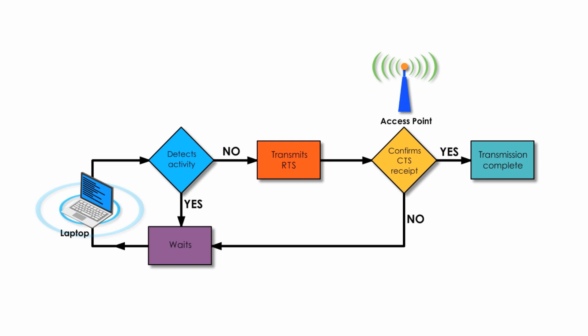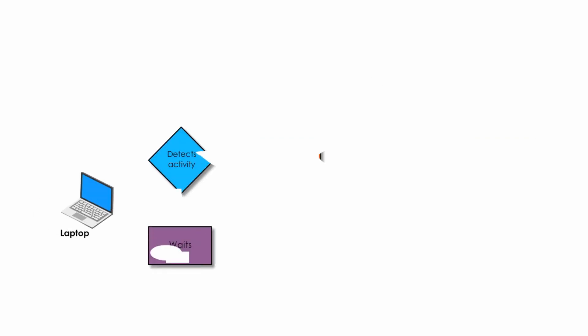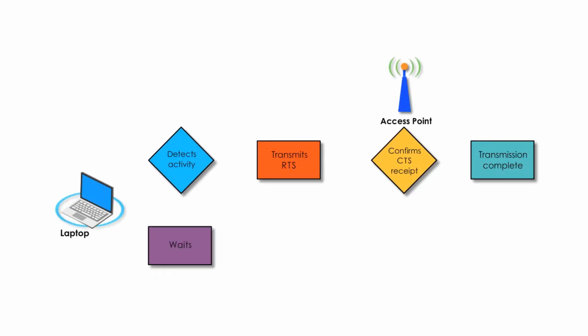Suppose my laptop wants to send some data. The first thing is to check whether or not the channel is clear. If activities are detected, it would wait for a random amount of time and try again.